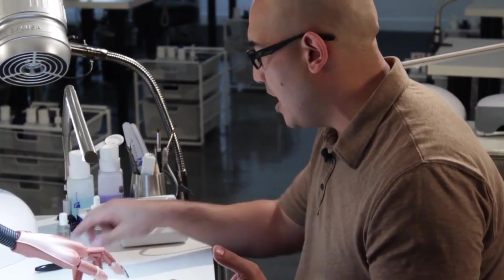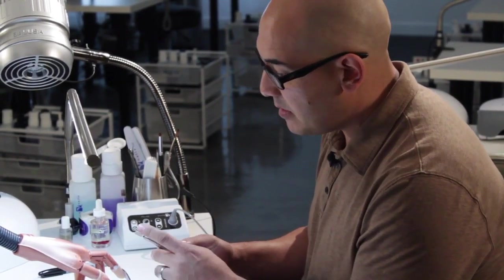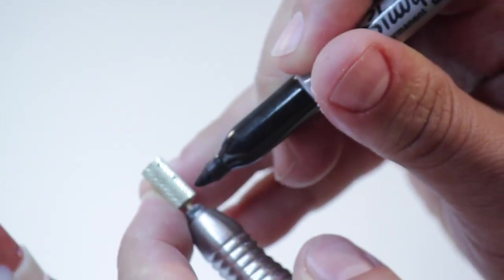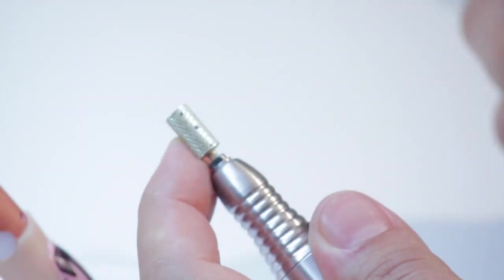What we want to be able to do when we're filing into perfection is understanding the zones of your barrel so that you can file without thinking. Now, if you look at the barrel, it always has to be broken down into three zones. Zone one, zone two, zone three, as you can see.